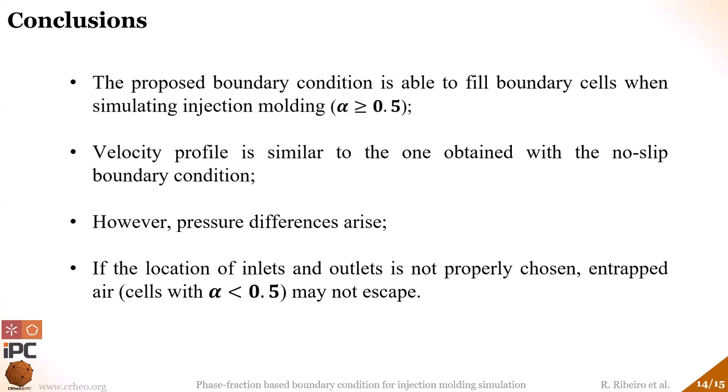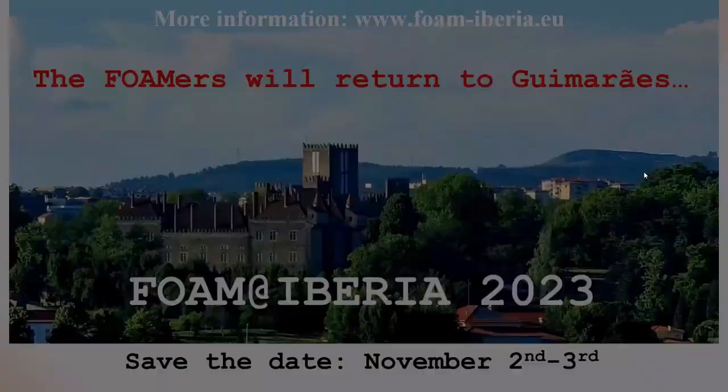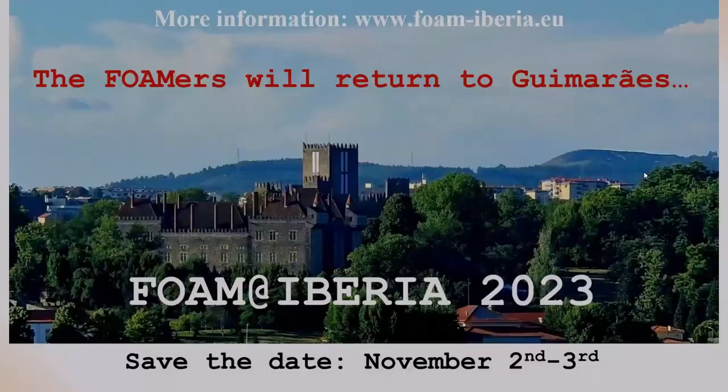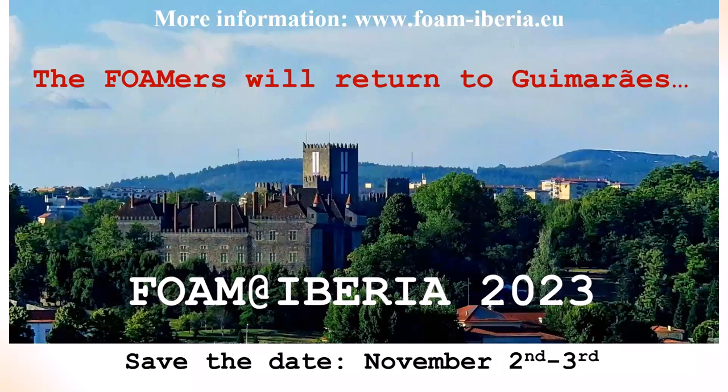As conclusions: this proposed boundary condition is able to fill boundary cells when simulating injection molding with alpha greater than or equal to 0.5. The velocity profile is similar to that obtained with no-slip. There are some differences in pressure that we need to address. In more complex geometries, we need to take care of the proper location of inlets and outlets; otherwise, cells with entrapped air may persist. I thank the Portuguese Foundation for Science and Technology for funding my PhD grant. We hope to see you at the Foam Iberia meeting in Portugal on the 2nd and 3rd of November, with courses and talks.